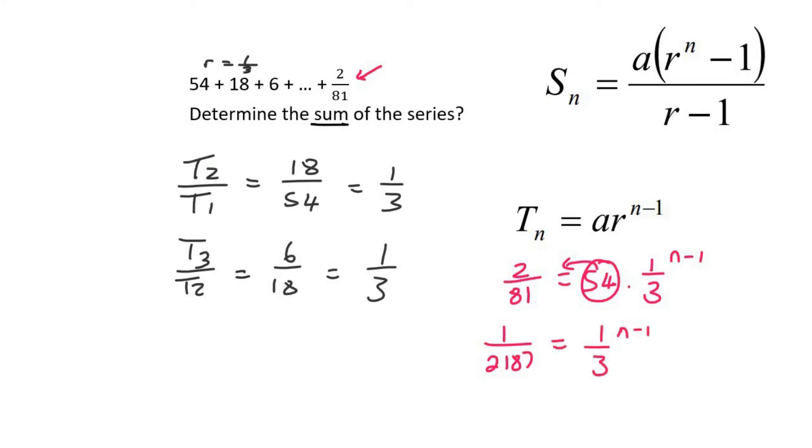Now there's many ways that you can do this from this step, but I'm just going to use logs. So what we're going to say is that n minus 1 equals to log of a third, and then 1 over 2187. So I'm going to type all of this on the calculator now and that's 7. So we can say that n minus 1 is equal to 7, therefore n must be 8.